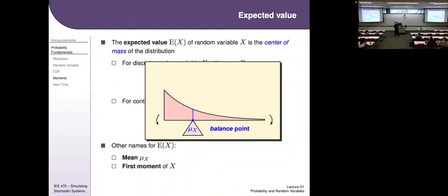Mean is just the center of mass. Given a probability density function, your mental model of how mass works should allow you to guess where the mean is, even before doing the math.